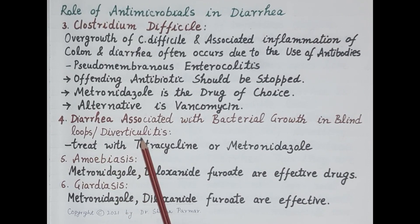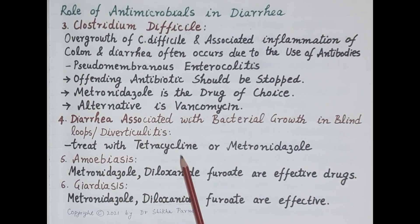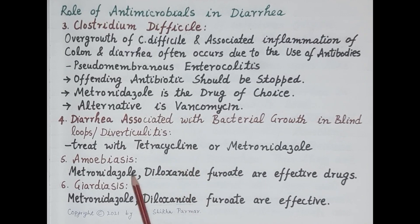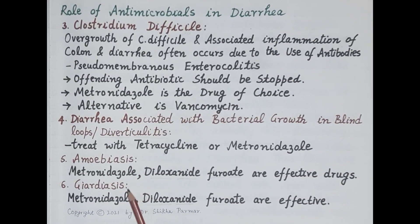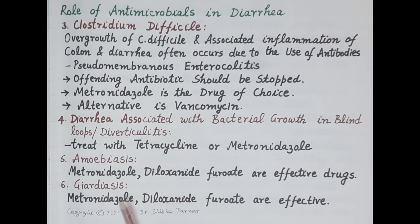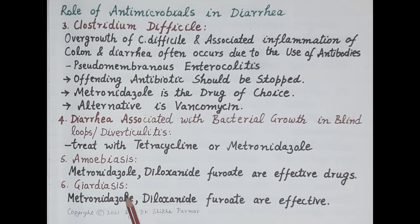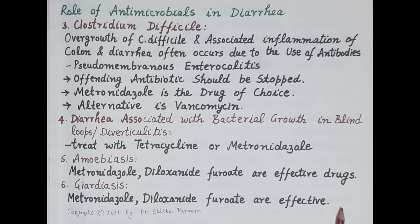Diarrhea associated with bacterial overgrowth in blind loops or diverticulitis is treated with tetracycline or metronidazole. For amoebiasis — diarrhea caused by Entamoeba histolytica — metronidazole and diloxanide furoate are effective drugs. For giardiasis — diarrhea caused by Giardia lamblia infection — metronidazole and diloxanide furoate are again effective.